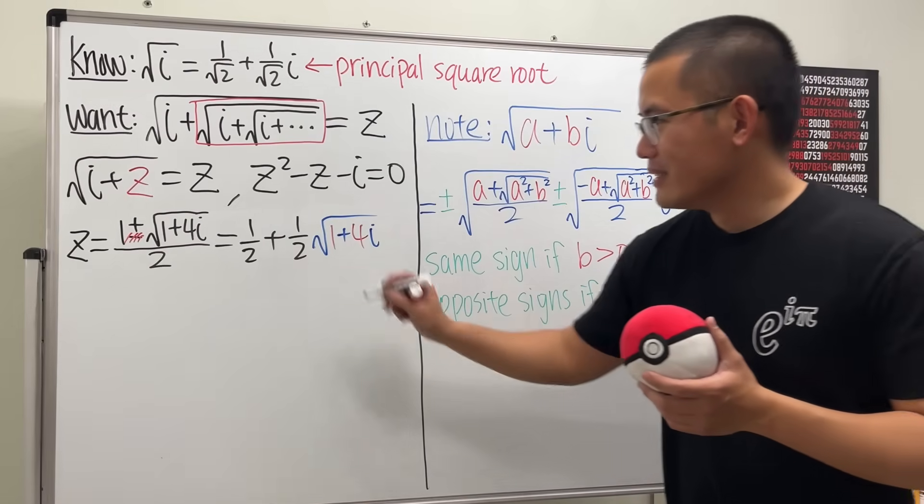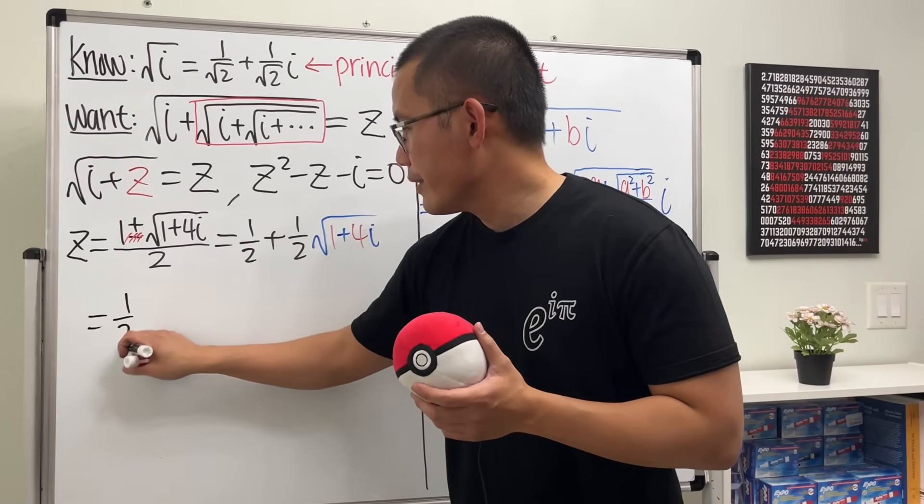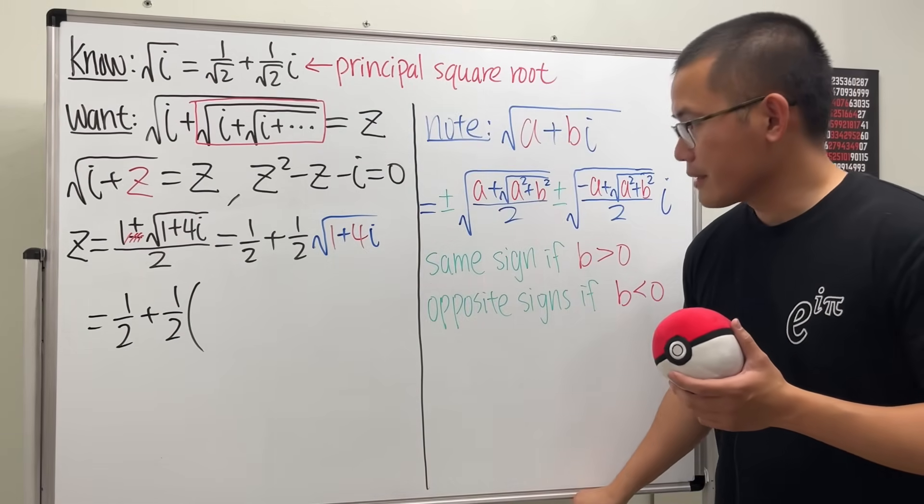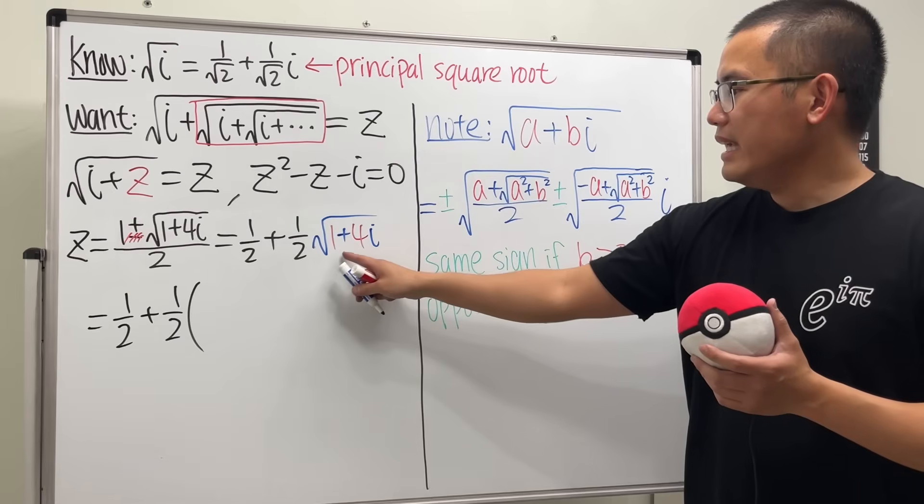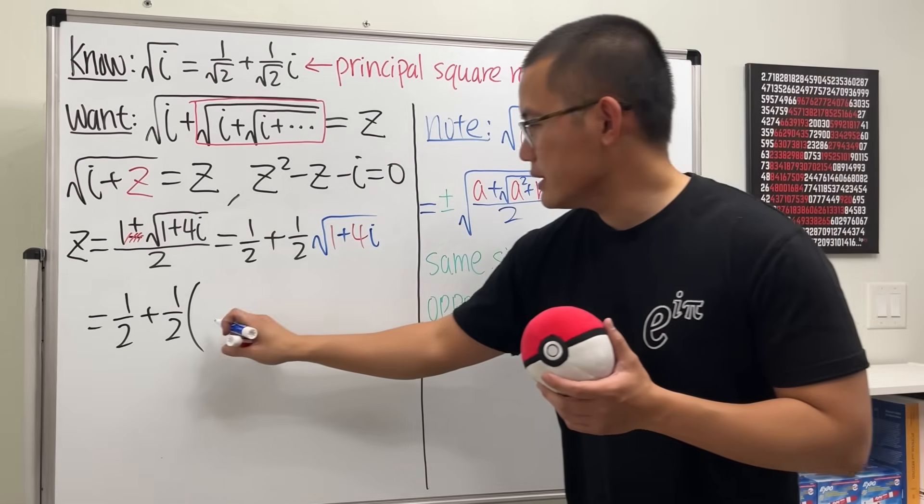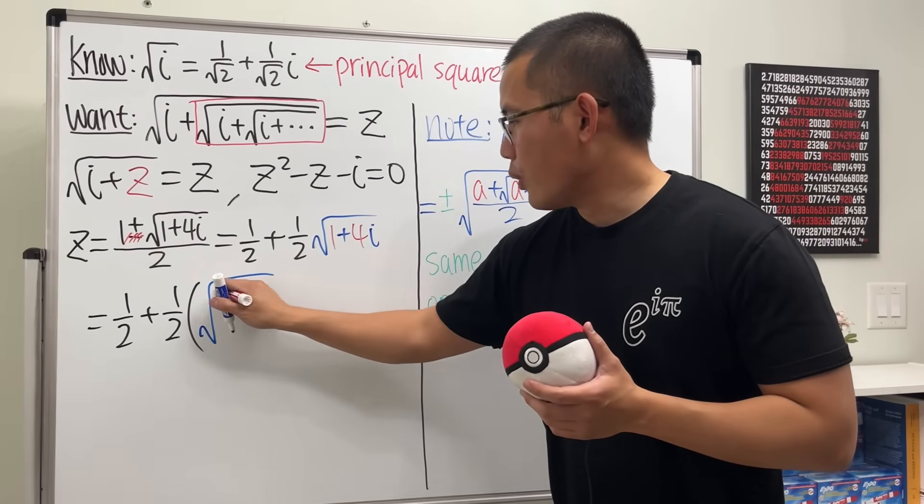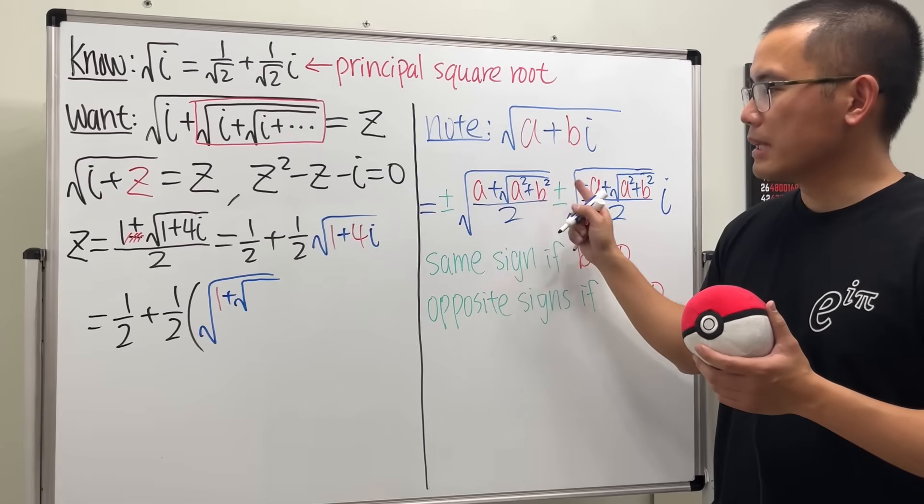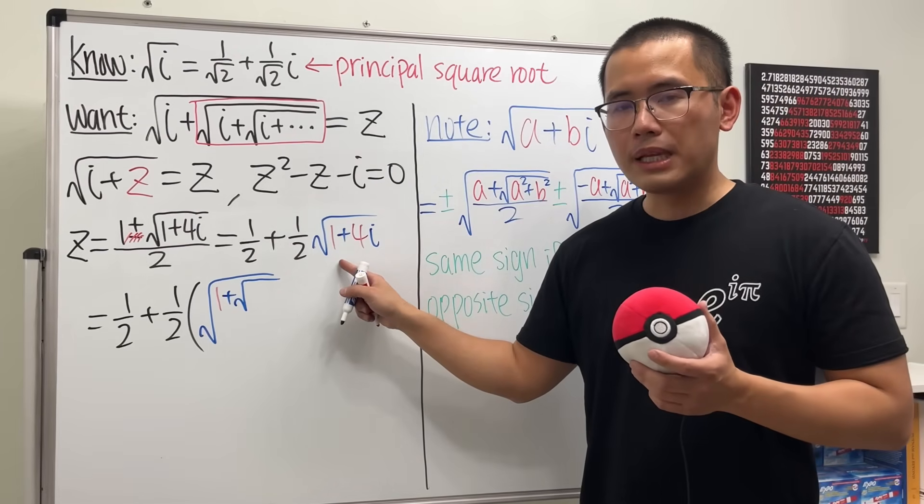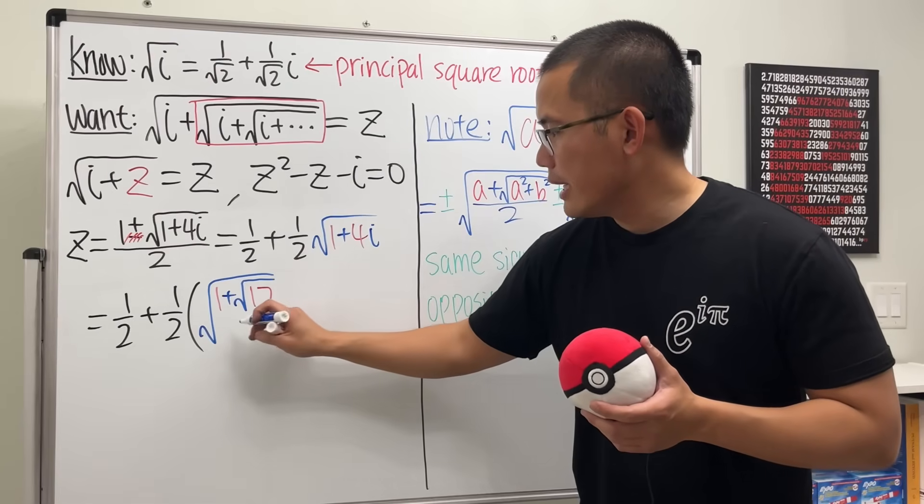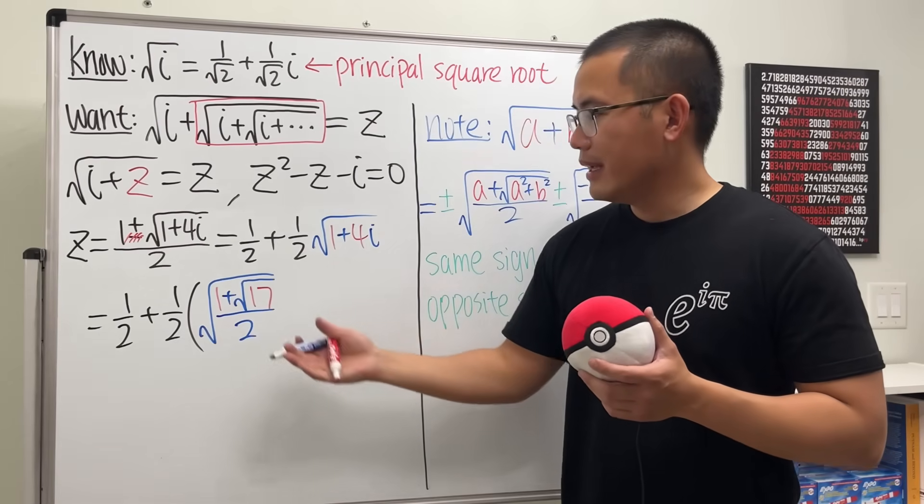To continue, we have 1 half here, and then plus another 1 half, and then we multiply by, here we go, a and b, right? 1 and 4. So, and we will just have the square root here first. a is 1, and then here we will have to do the square root of a square plus b square. 1 square plus 4 square is 17. So we have 17 here in that square root. And over 2. And that's the real part.